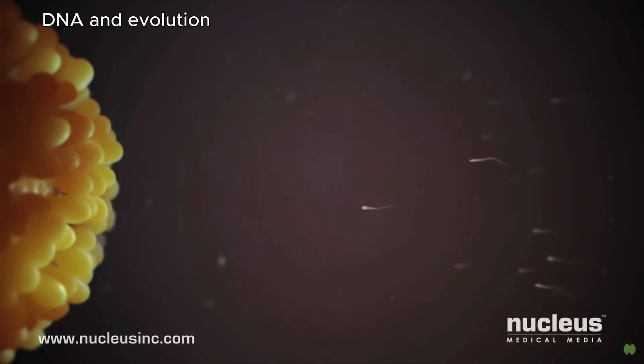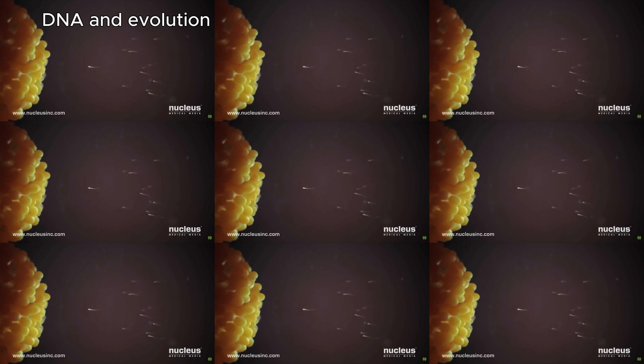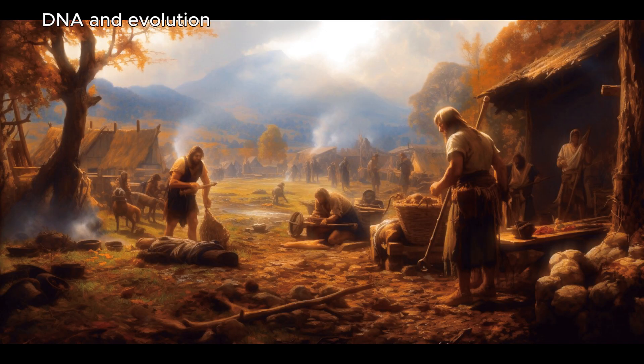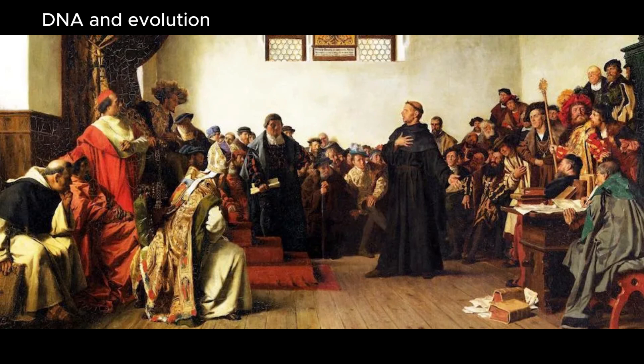Now imagine this process happening over a thousand years. That's about 50 generations of accumulated changes in our DNA. My great, great, great grandparents a thousand years ago had kids that were slightly different from them, and their kids had kids that were slightly different from them.